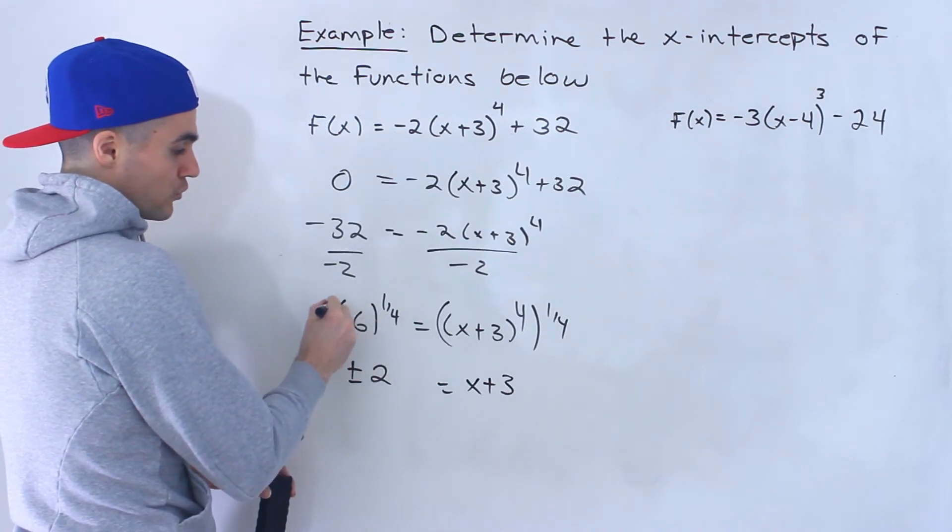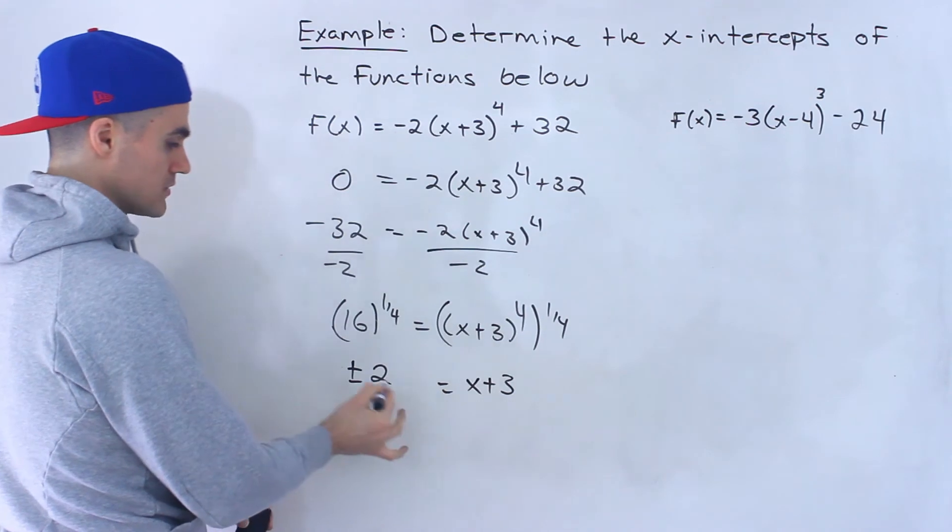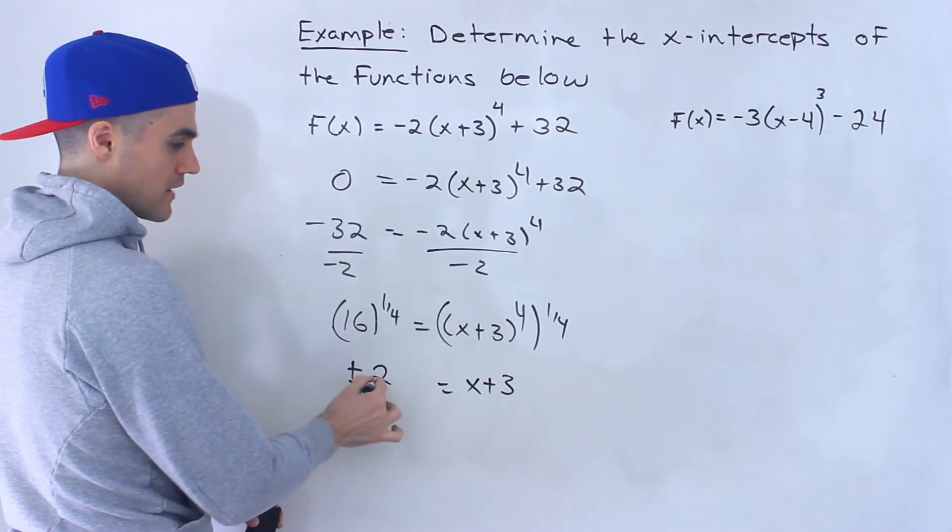So you can only take the fourth root of 0 or a positive number. And if you take the fourth root of a positive number, or an even root of a positive number, it's always going to give you plus or minus, a plus or minus value.